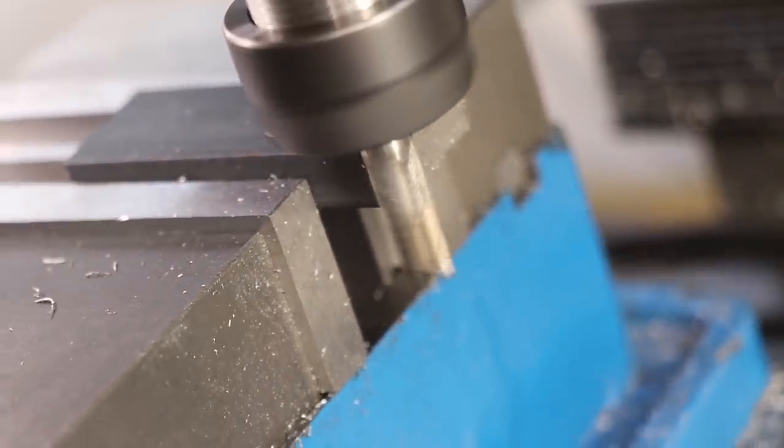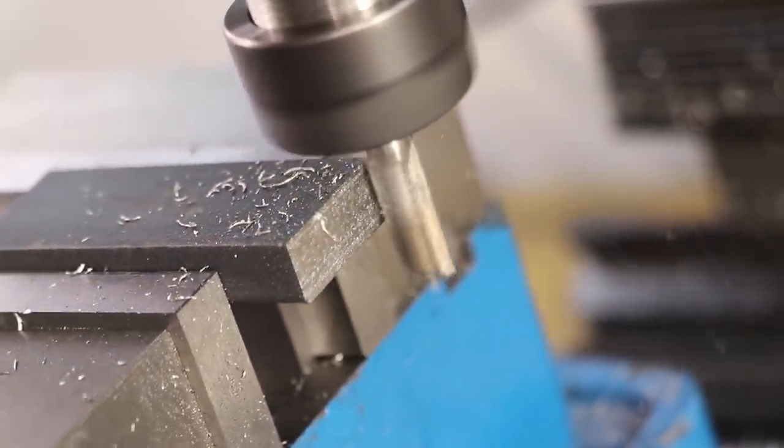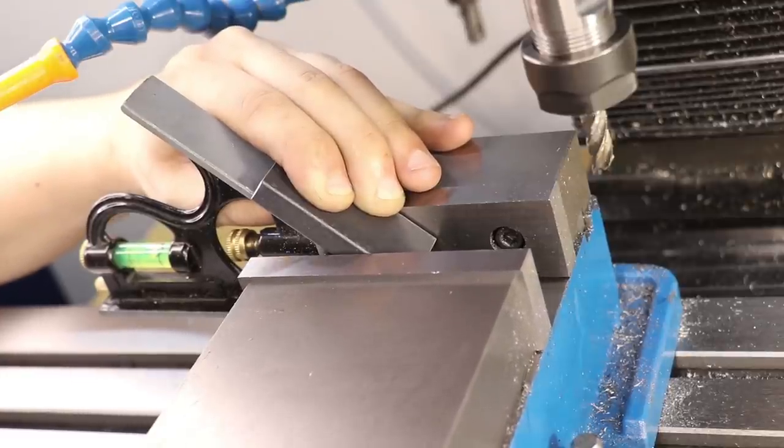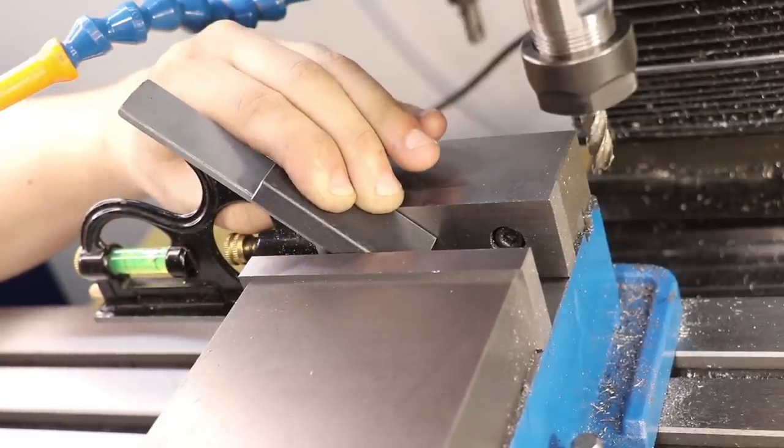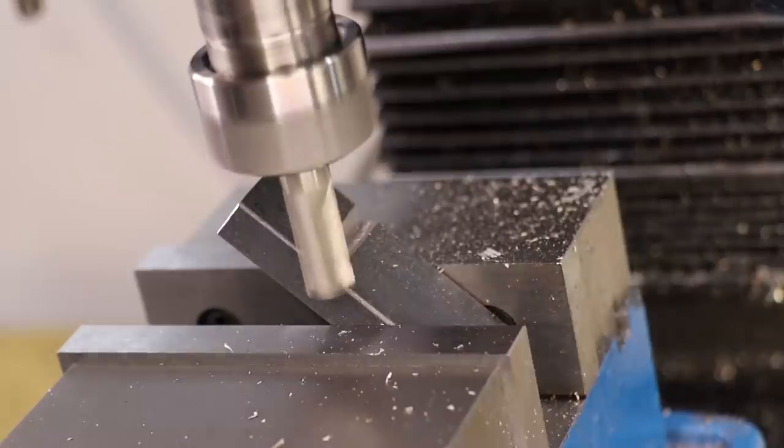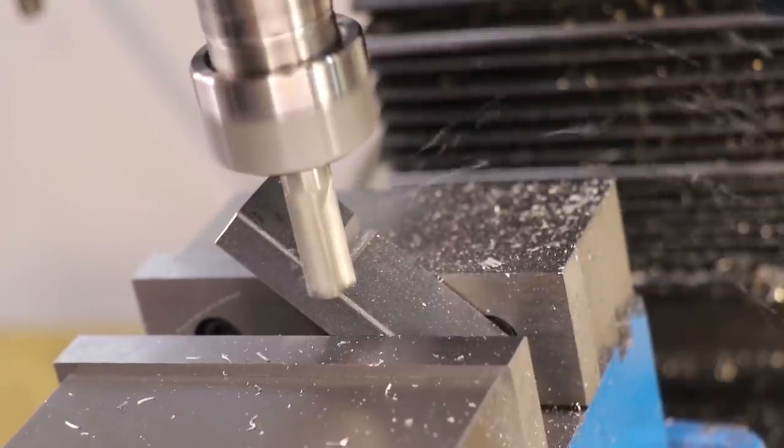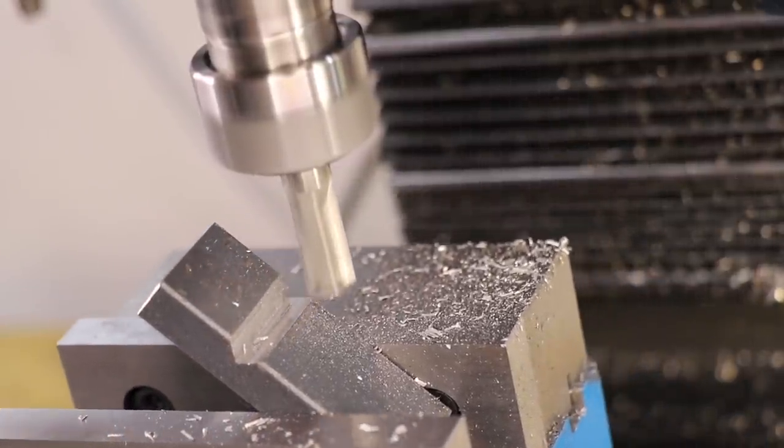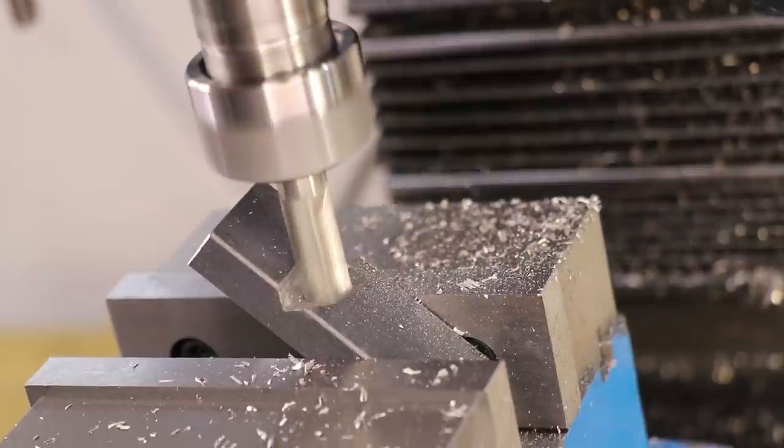I'll clean it up on the mill and then I'll mount it at a 45 degree angle. I don't have a precision angle block, but a combination square body will do a good enough job. I'll remove most of the material, only leaving a very small piece of material at the back.